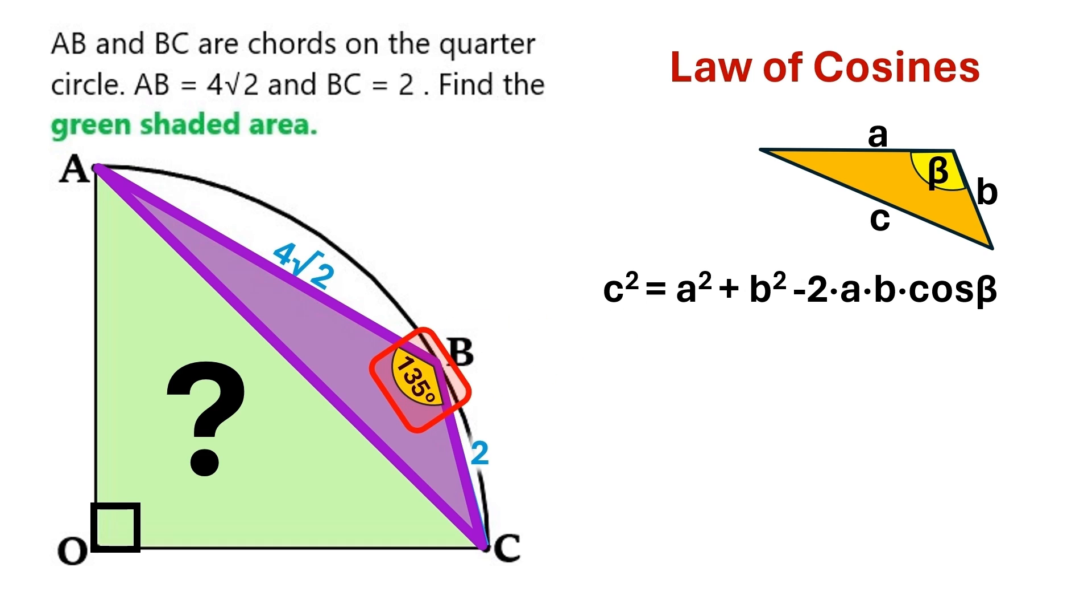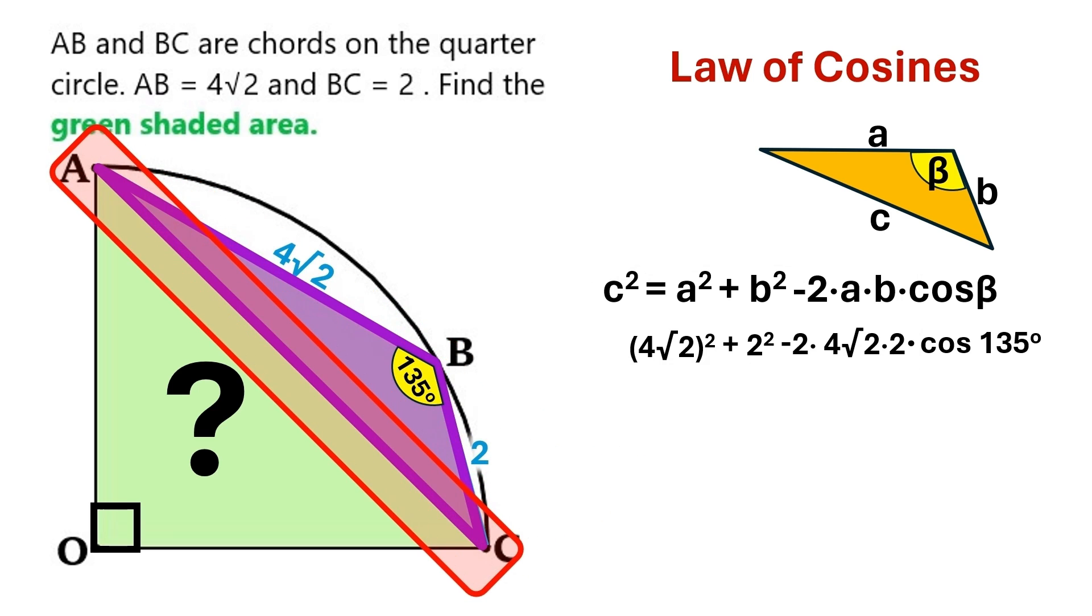In our purple triangle, this 135 degree angle corresponds to angle beta. So let's put cosine 135 over here. We also know these two side lengths, so let's put those numbers into our formula like this. And this AC is the missing side we want to find, so let's type AC squared on this side.